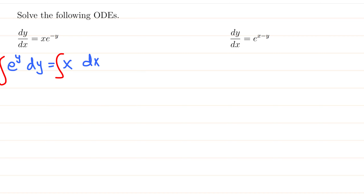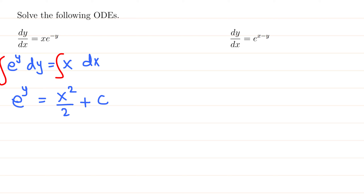Integrating both sides: the anti-derivative of e^y with respect to y is just e^y, and the anti-derivative of x is x squared over 2. We have two constants but write just one collective constant c. To solve for y, take ln of both sides — ln of e^y is just y, so y equals ln of (x squared over 2 plus c).